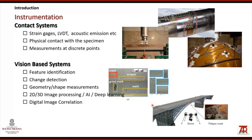Contact systems such as strain gauges, LVDTs, and acoustic emission require physical contact with a specimen, and the measurements they acquire are typically at discrete points. Vision-based systems are used for feature identification, change detection, and measurements of shape and geometry, often using 2D or 3D image processing involving artificial intelligence and deep learning. A level above that is digital image correlation, where in addition to shape identification we compute deformations and strains.